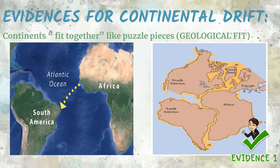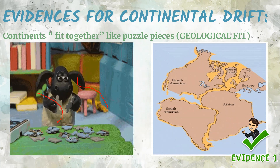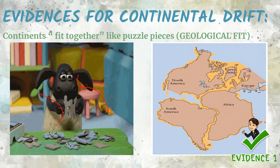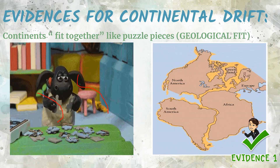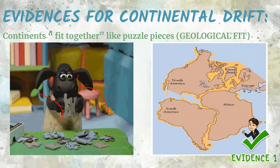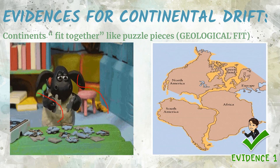The first and most obvious evidence for continental drift that Alfred Wegener proposed is that the continents fit together like puzzle pieces — also known as geological fit. As you can see, South America and Africa have corresponding shapes, much like jigsaw pieces. If we put the different continents together, they fit like jigsaw pieces.